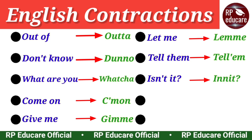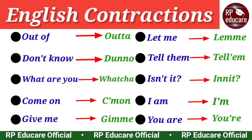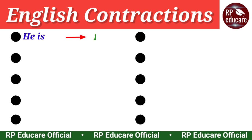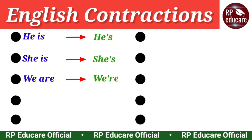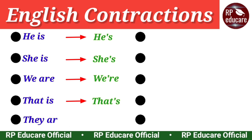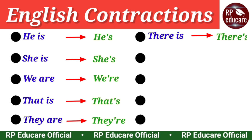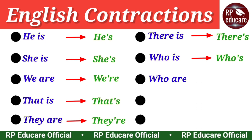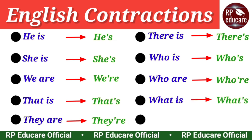I am - I'm. You are - you're. He is - he's. She is - she's. We are - we're. That is - that's. They are - they're. There is - there's. Who is - who's. Who are - who're. What is - what's.